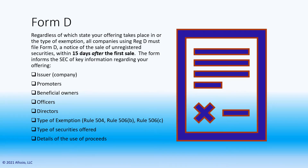You must file your Form D with the Securities and Exchange Commission stating that you are claiming an exemption. This form is rather simple and contains general information related to your transaction. It is due 15 days after the date of the first sale of securities.